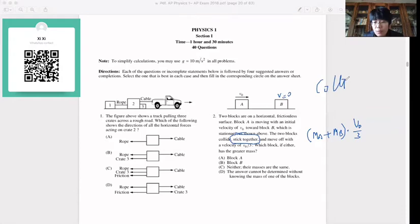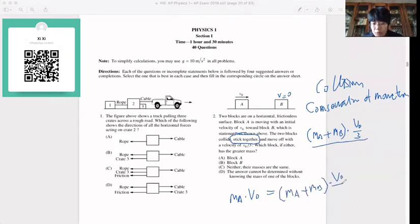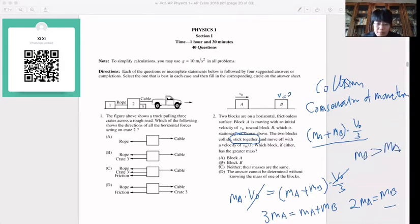We have collisions, so what topic do we think of? We have conservation of momentum. In this case, the initial momentum is MA times V0. The final momentum is MA plus MB times V0 over 3. Both sides times 3: 3MA equals MA plus MB, so 2MA equals MB. That tells us that MB is going to be larger than MA. So which one has greater mass? Greater mass is going to be MB.